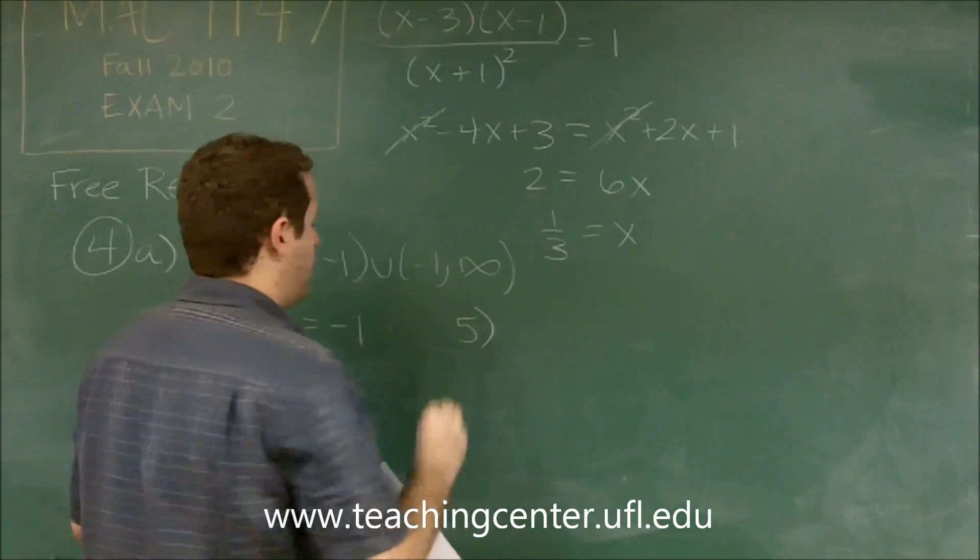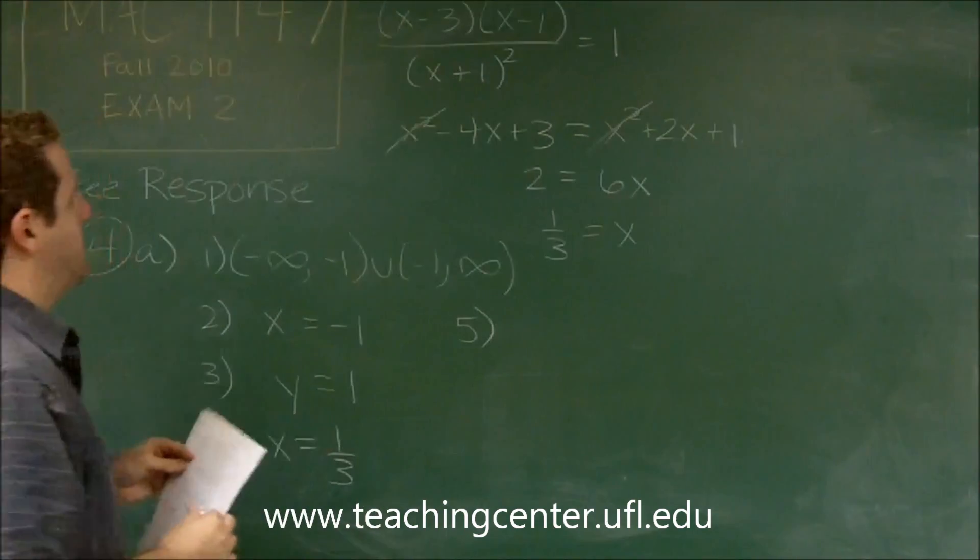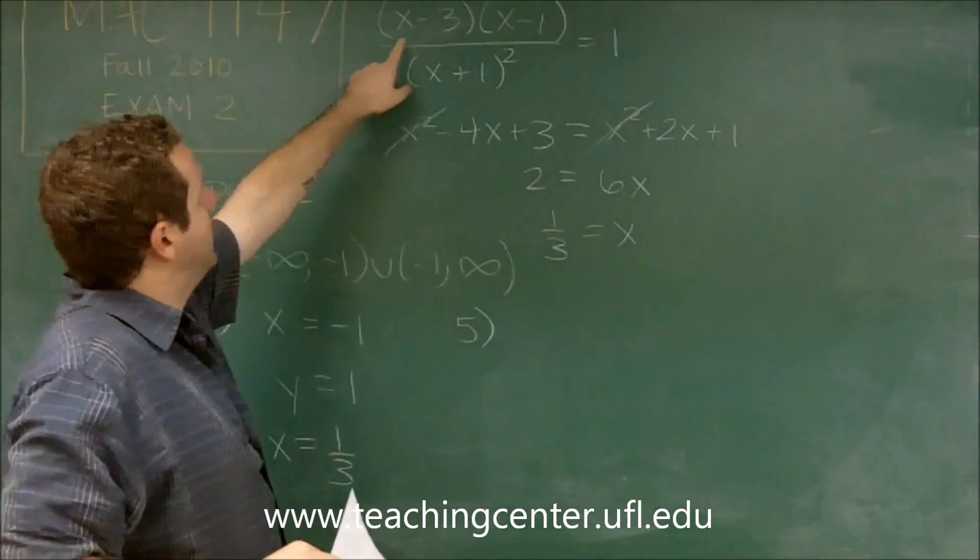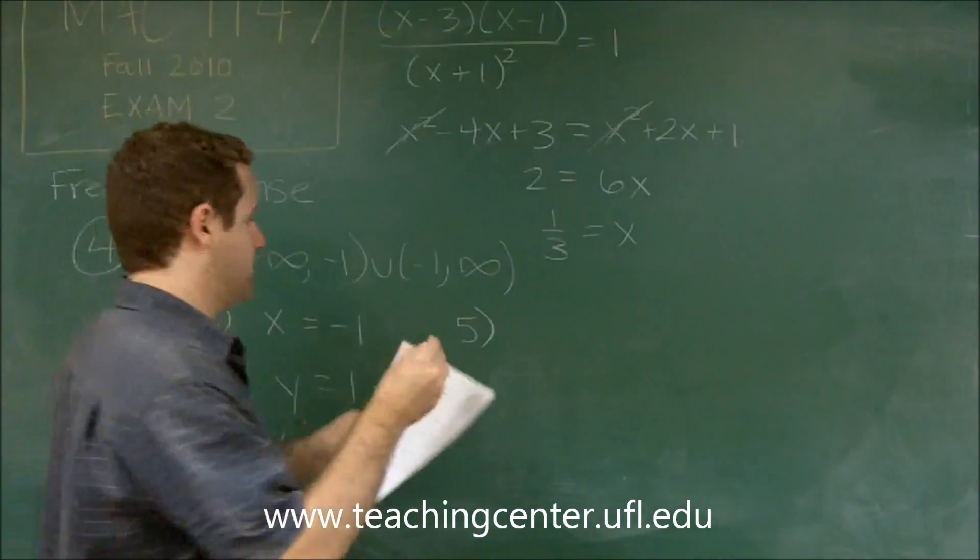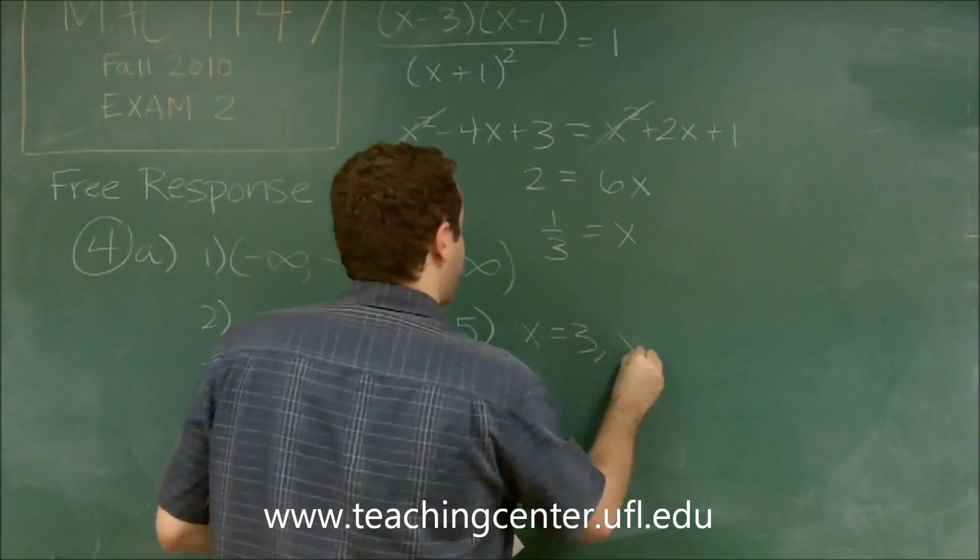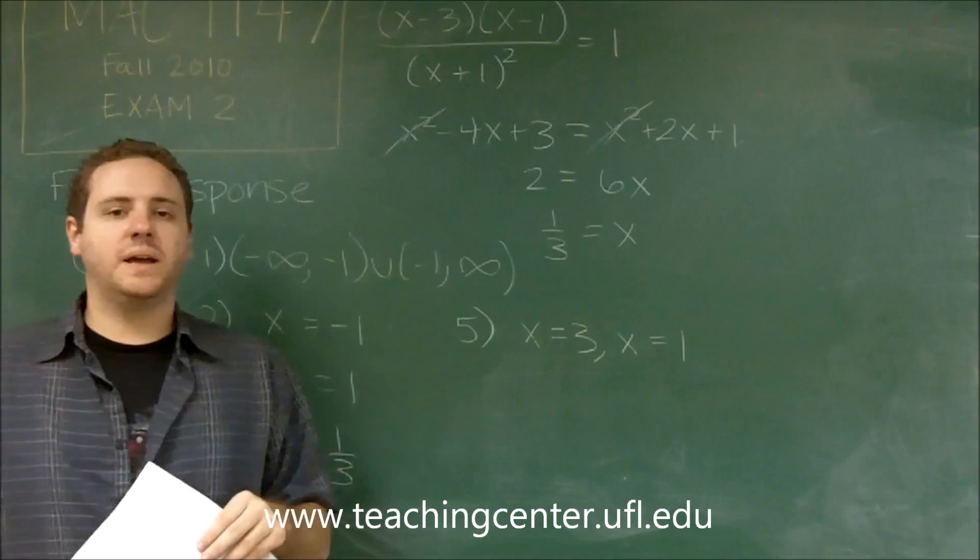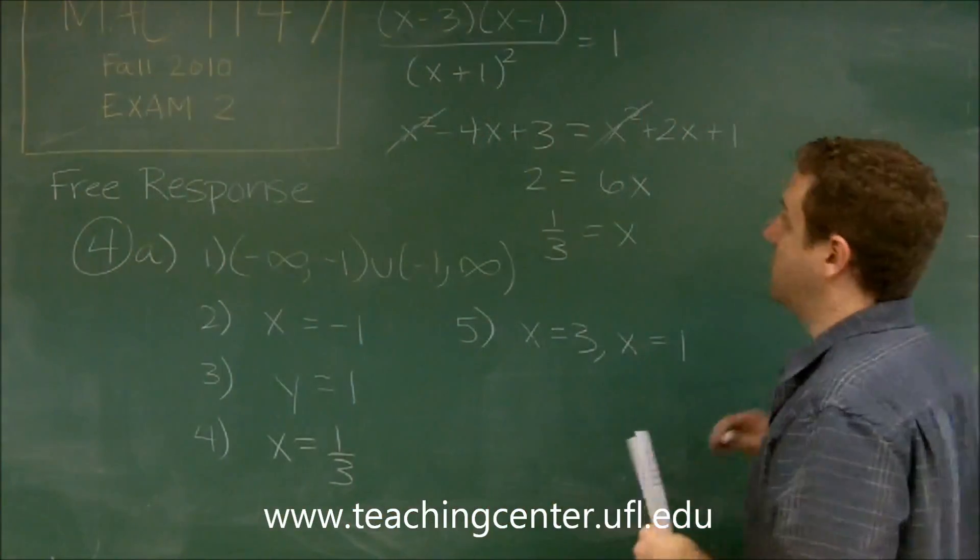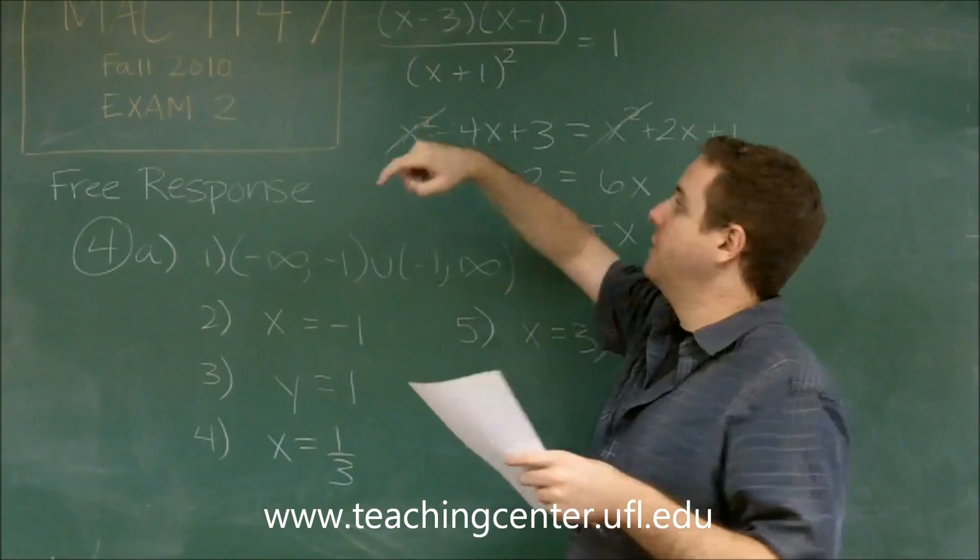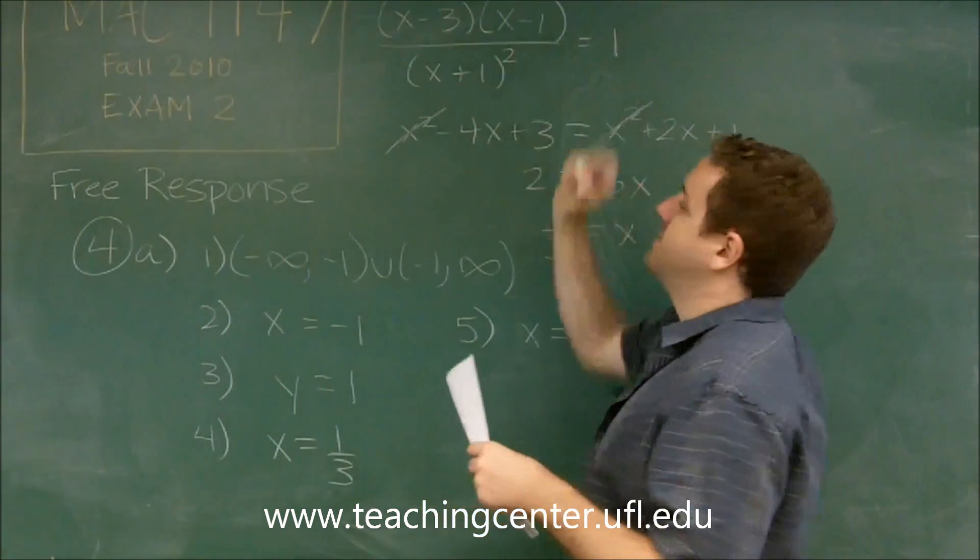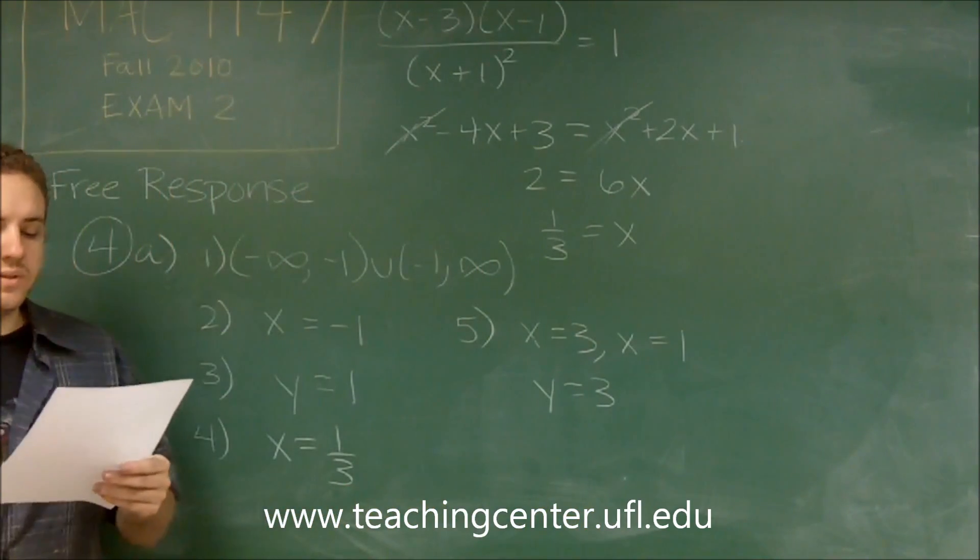For number 5, we have the x-intercepts and y-intercepts. The x-intercepts are where the function would be 0. That would be whatever makes the numerator equal to 0. We have 3 and 1, so our x-intercepts are x equals 3, x equals 1. Our y-intercept is what we get when we plug in 0 for x. If we plug in 0, on the denominator we'll just get 1. On the top, we'll get negative 3 times negative 1, which is 3. So our y-intercept is y equals 3.